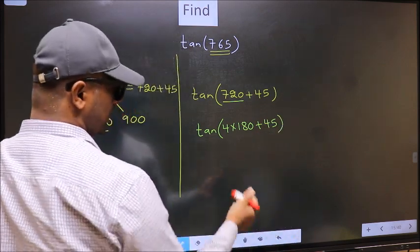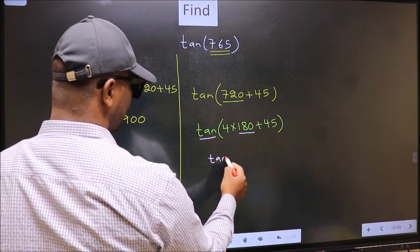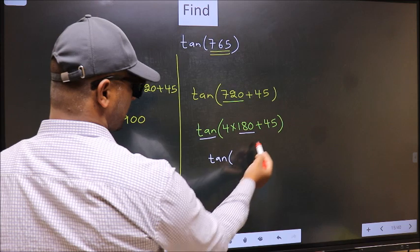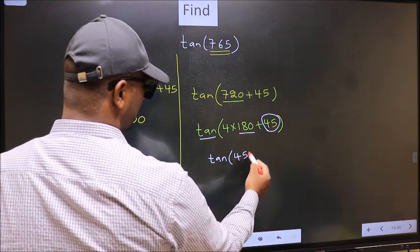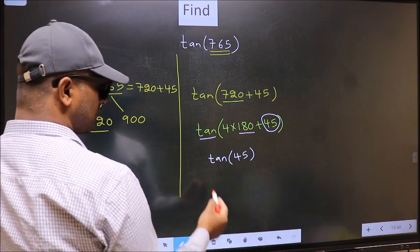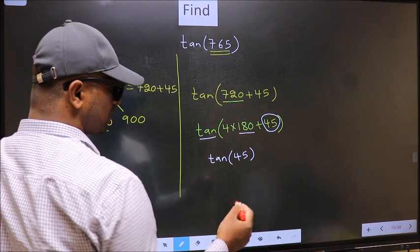Next, here we have 180, so tan is not going to change. It will remain tan and inside we get this angle 45. Now the question is: will we get here plus or minus? To answer that, we should look at the number before 180, that is 4.